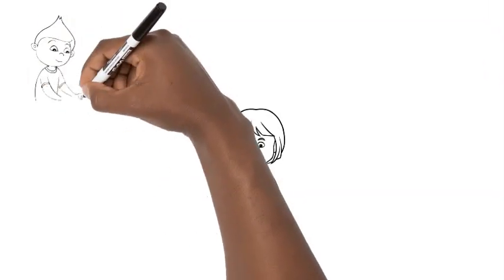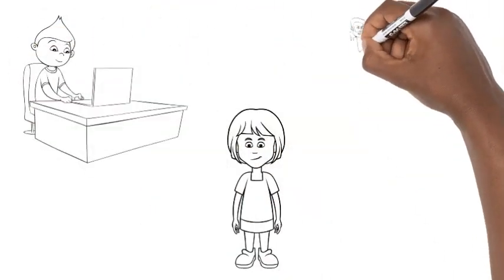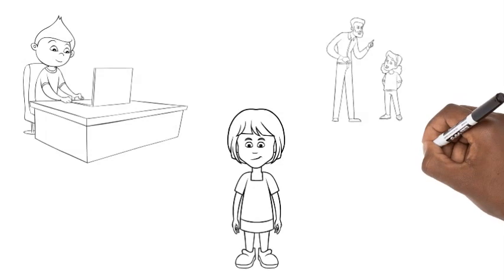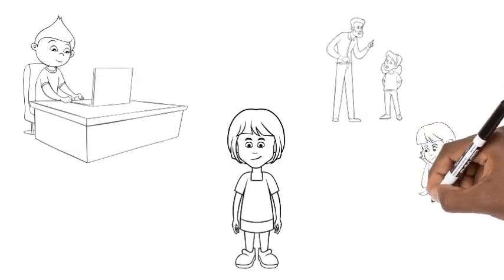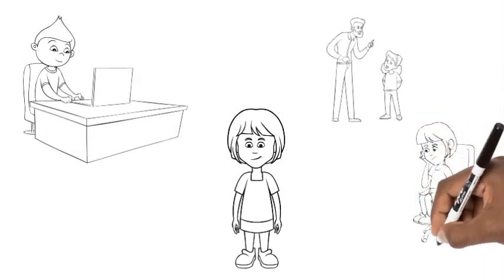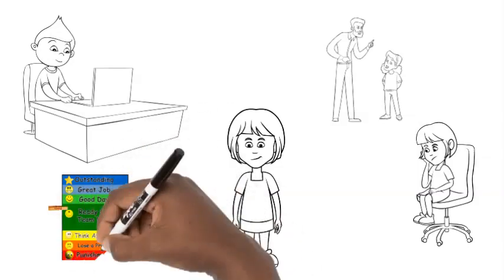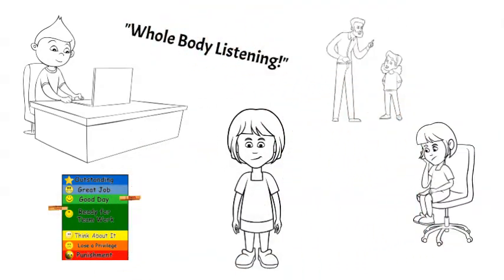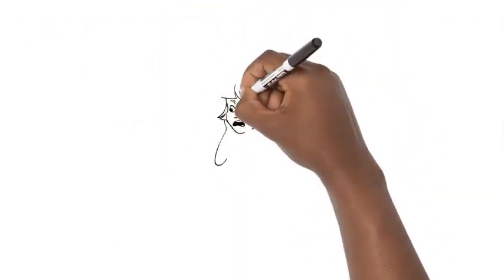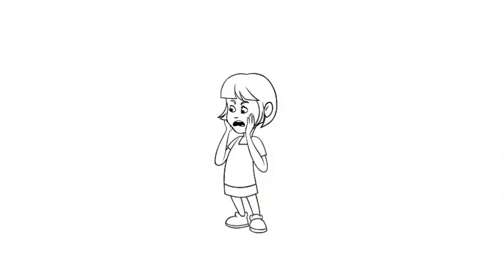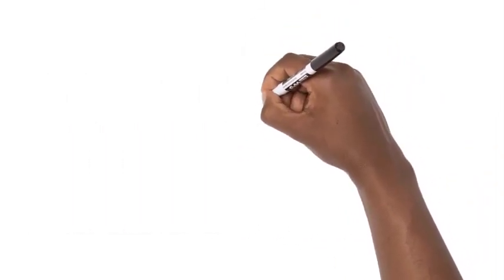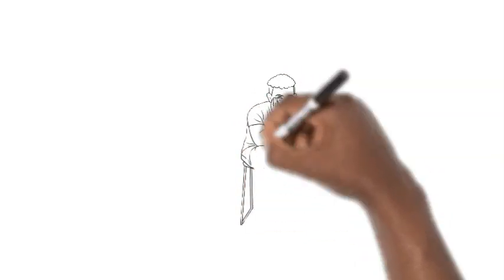Requiring students to keep cameras on during virtual learning, insisting on eye contact, requiring that students sit still in uncomfortable chairs, behavior charts, whole body listening, all of these things prioritize non-disabled ways of being and send the message, whether intentionally or not, that this space was not created for you.